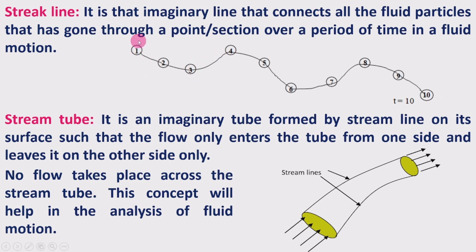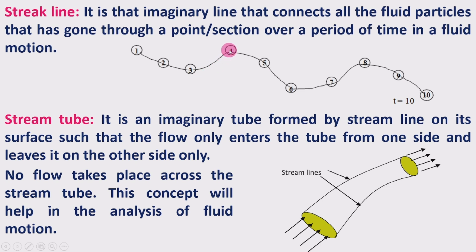Here, the first particle passes through a point, then particles two, three, up to ten pass through that same point or section. While these particles are flowing they move to different positions, and connecting all those positions forms a line — that is the streak line.